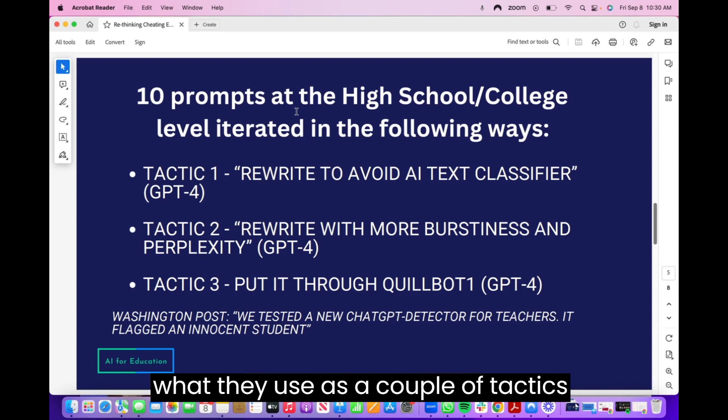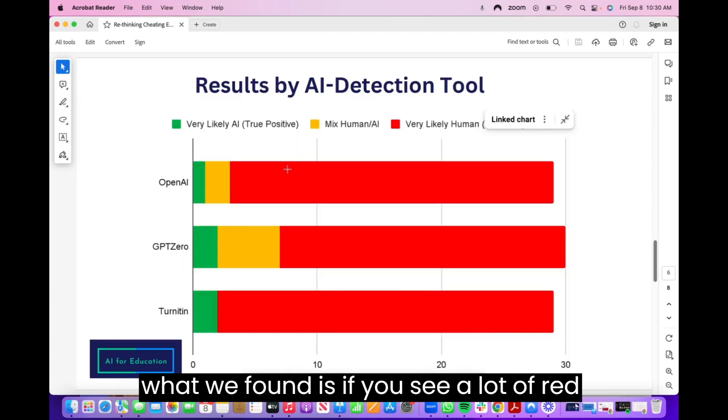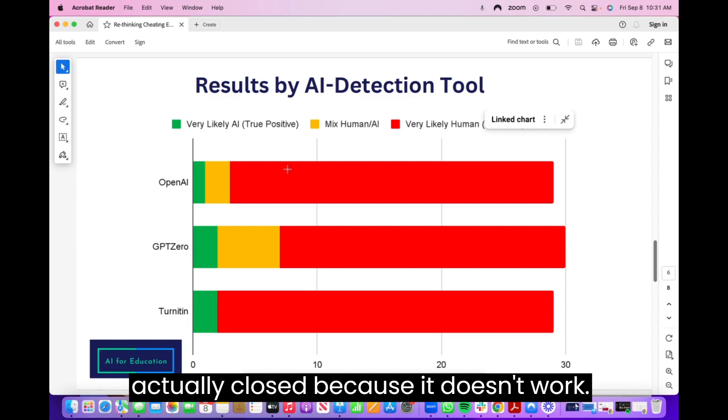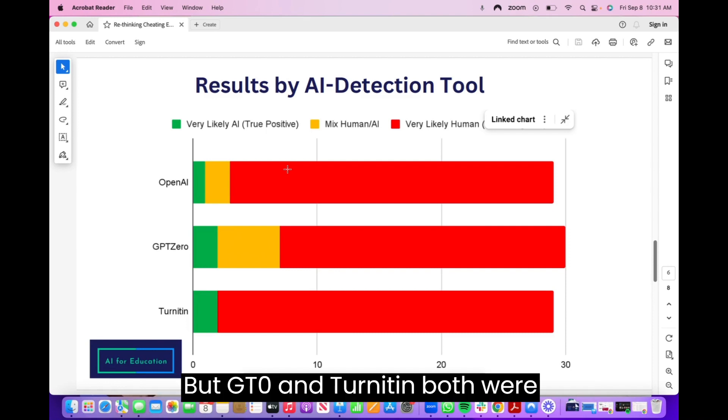And what they used is a couple of tactics, putting it through GPT-4 with a simple prompt, rewriting it, and then also putting it through Quillbot. And what we found is if you see a lot of red here, you're going to see that this is really not working. And we used OpenAI when it had its own tool, which it actually closed because it doesn't work.